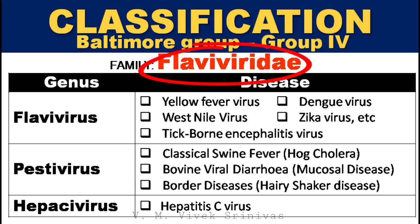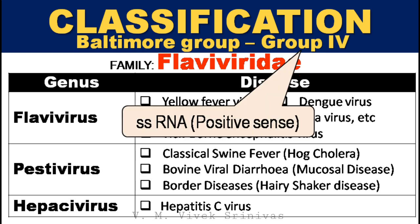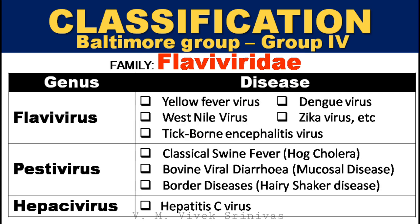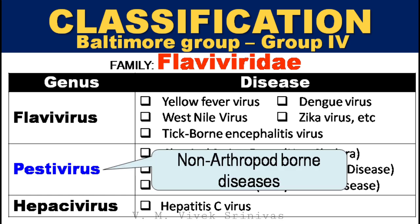Classical swine fever belongs to the Flaviviridae family, classified under Baltimore Group 4, which comprises viruses with a single-stranded positive-sense RNA genome. Some veterinary important viral diseases under this family include classical swine fever, bovine viral diarrhea, and border disease, all under the genus Pestivirus. The diseases under the genus Pestivirus are non-arthropod-borne viral diseases.